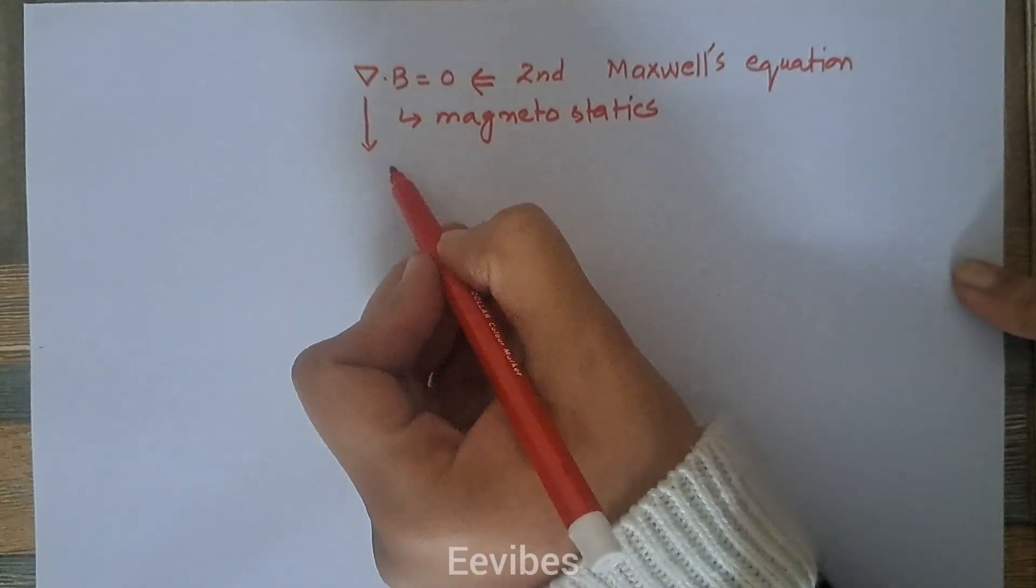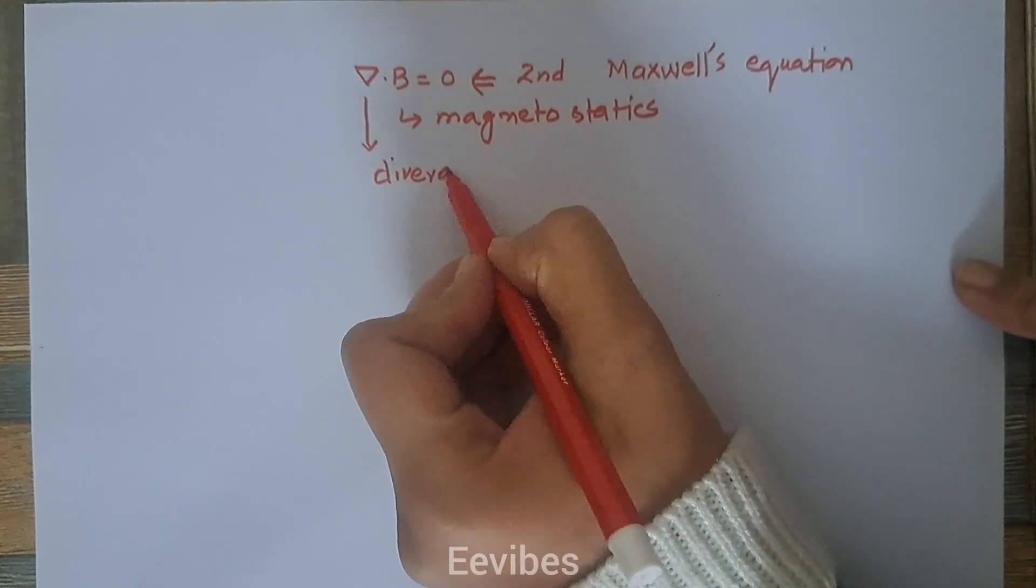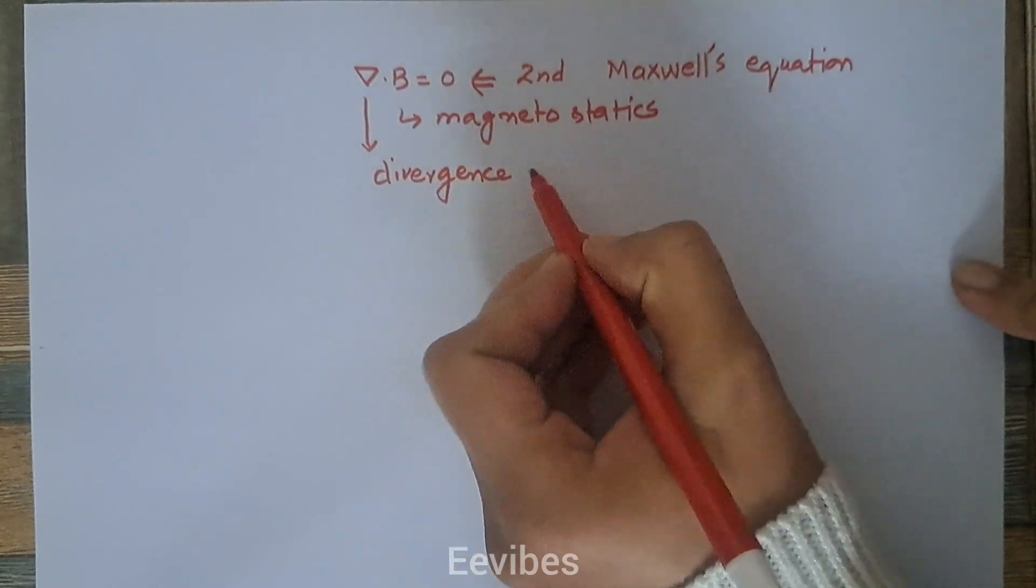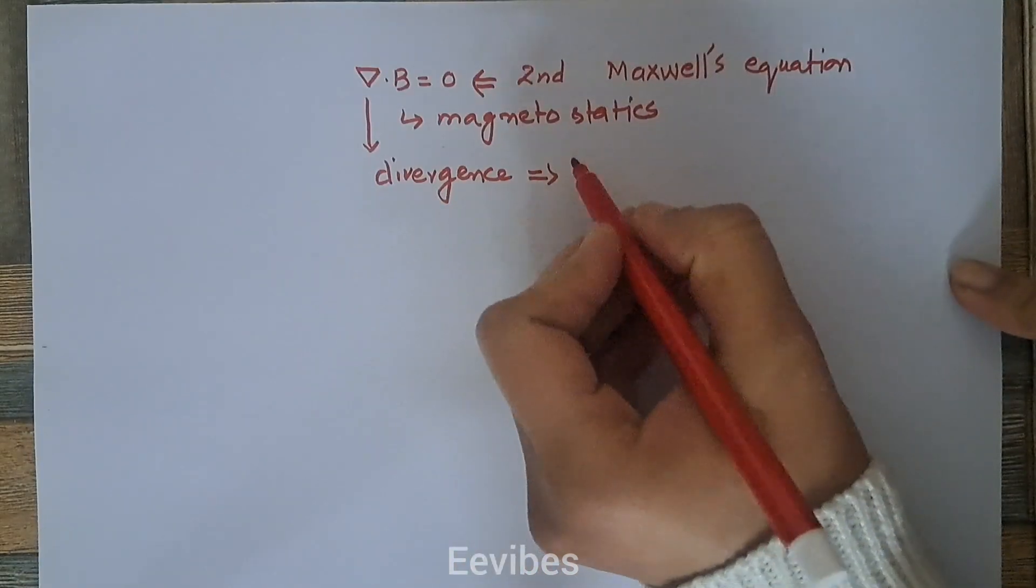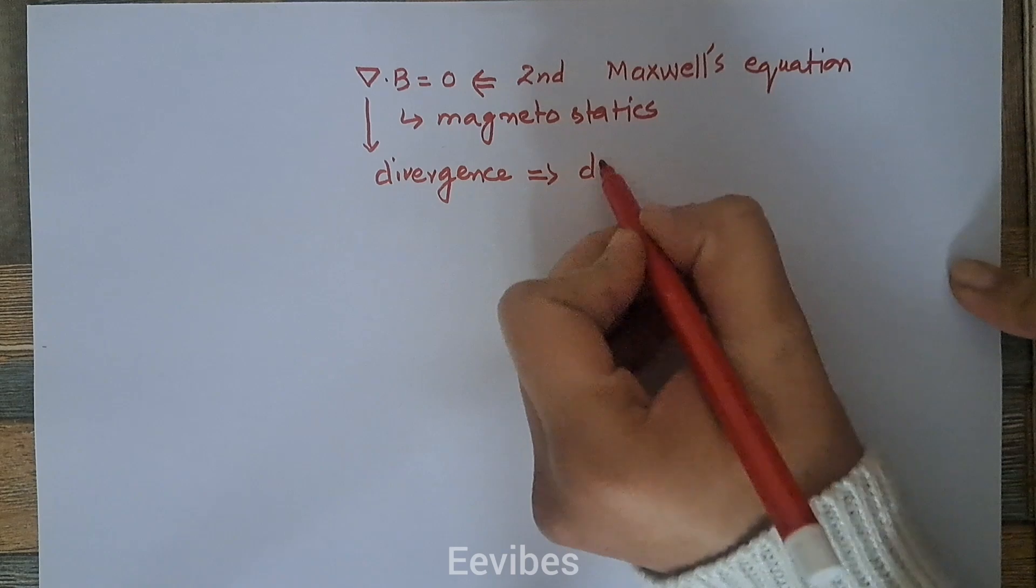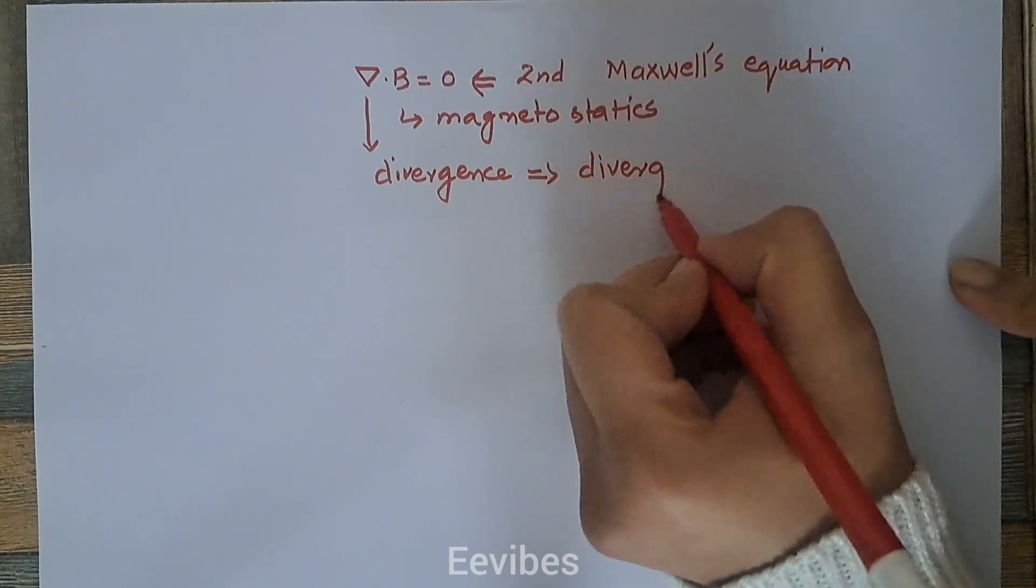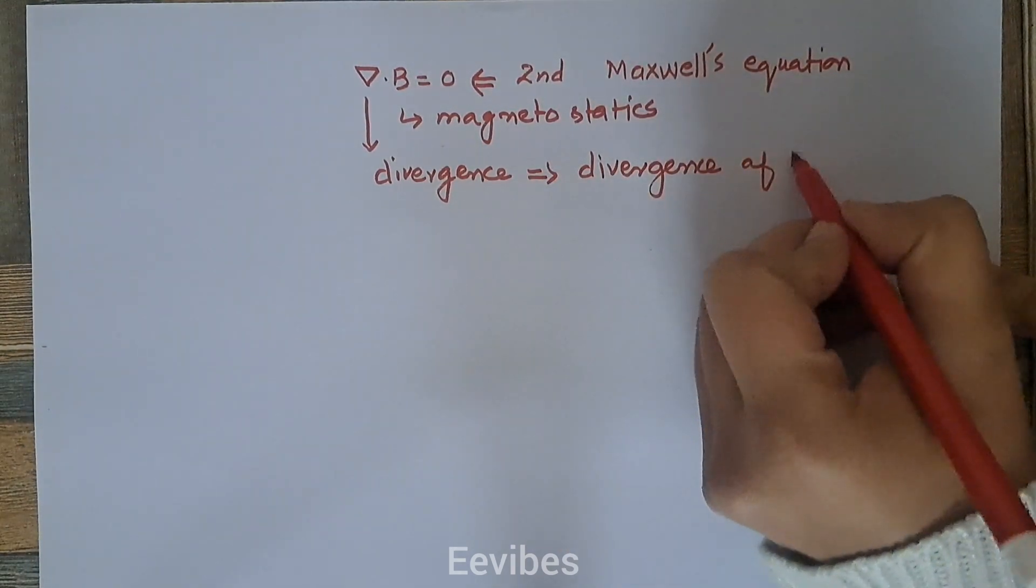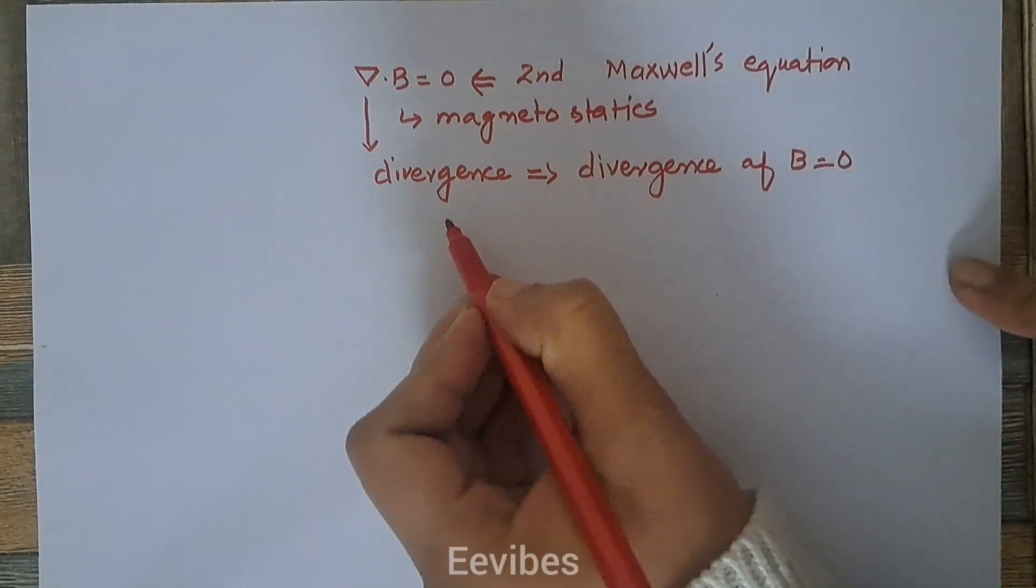Now what does it mean? The operator del is known as the divergence. So according to this equation, we state that divergence of B is equal to zero.